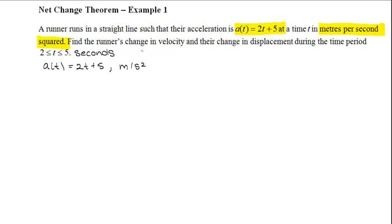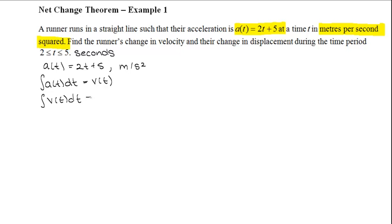We have to find the runner's change in velocity and their change in displacement. The relationship between acceleration, velocity, and displacement is: the integral of acceleration is equal to velocity, and the integral of velocity is equal to position.